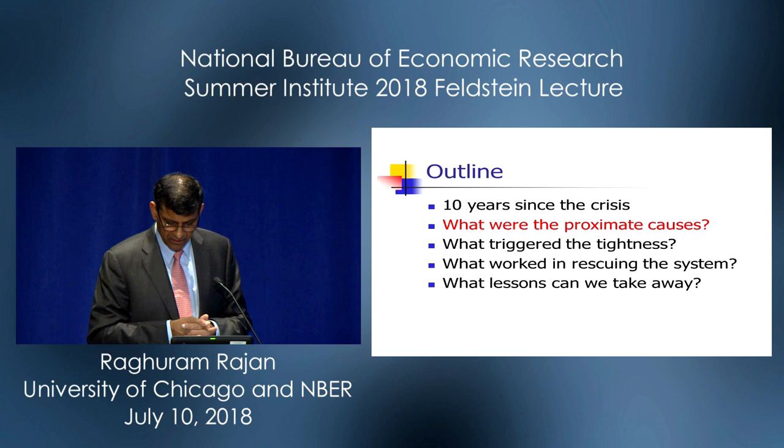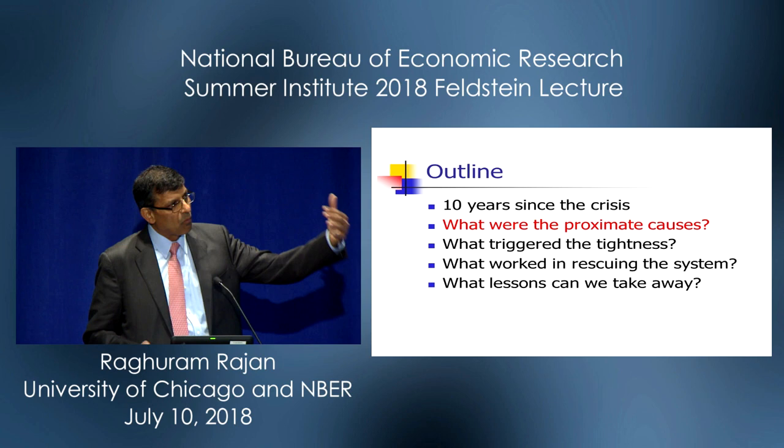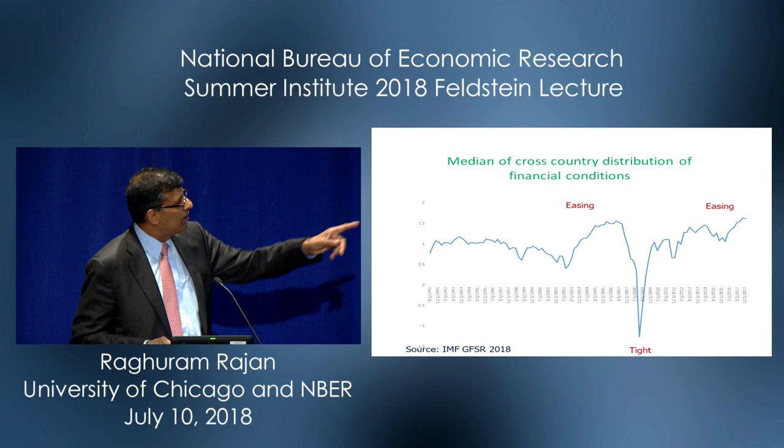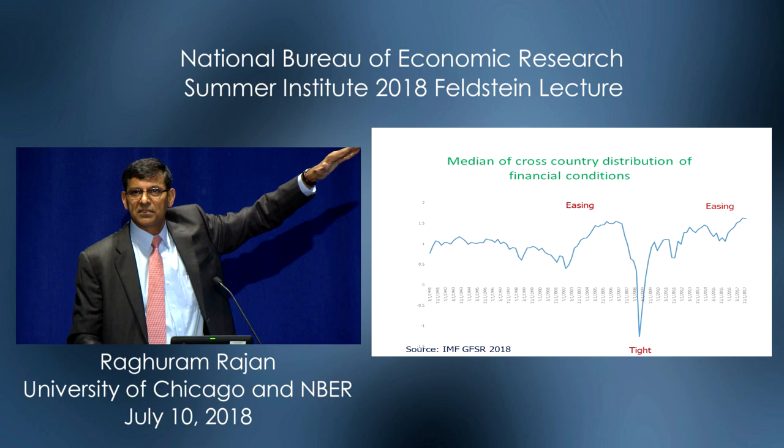Once I talk about why liquidity may explain how we got to the crisis, I want to talk about one of the problems that we saw in the crisis. Here is a graph of the distribution of financial conditions across countries — higher is easier — and what you see is, leading up to the financial crisis, you have a tremendous easing of financial conditions.